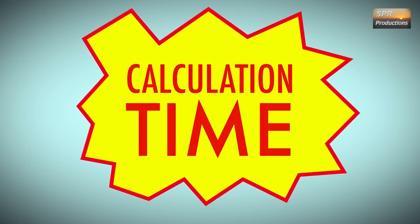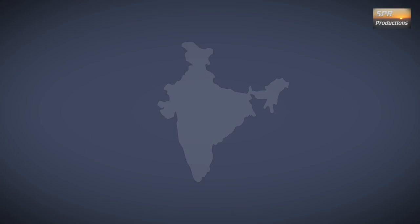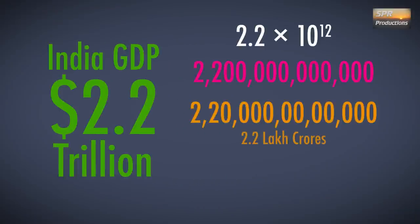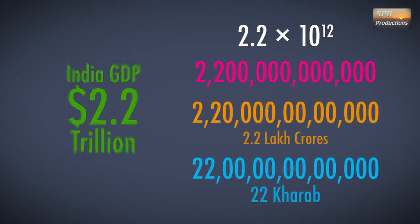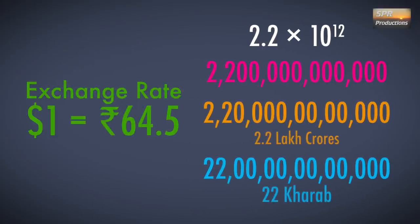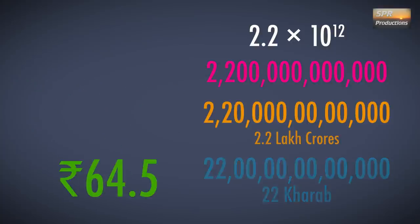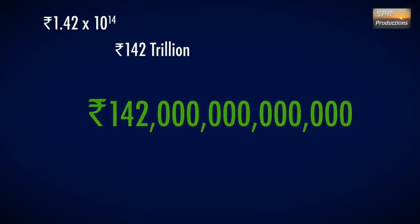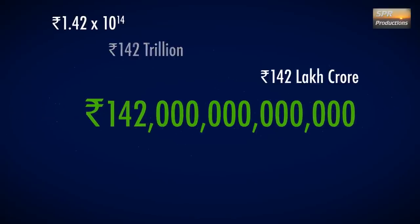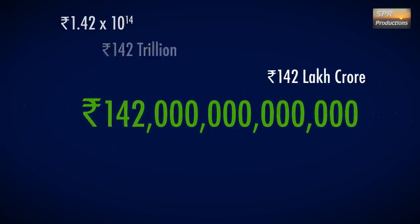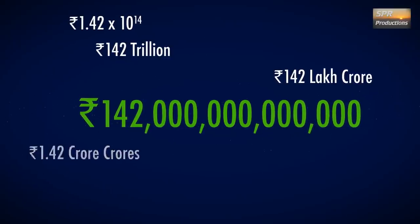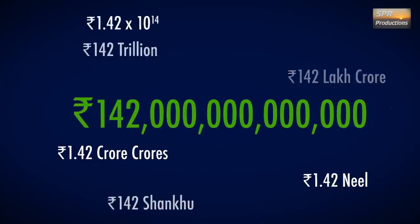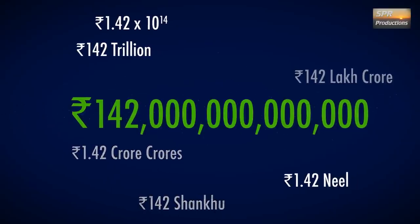As I shall now demonstrate: India's GDP is around 2.2 trillion dollars — or is it 2.2 lakh crore, or 22 Kharab? Now let's convert that to rupees at the prevailing exchange rate of 64.5 rupees to the dollar. Scientific notation makes this a little easier. The result is 142 trillion rupees, or 142 lakh crore, or 1.42 crore crores, or 1.42 Neel. The original Vedic system this is all based on would call it 142 Sankhu — I don't know if I pronounced that correctly.